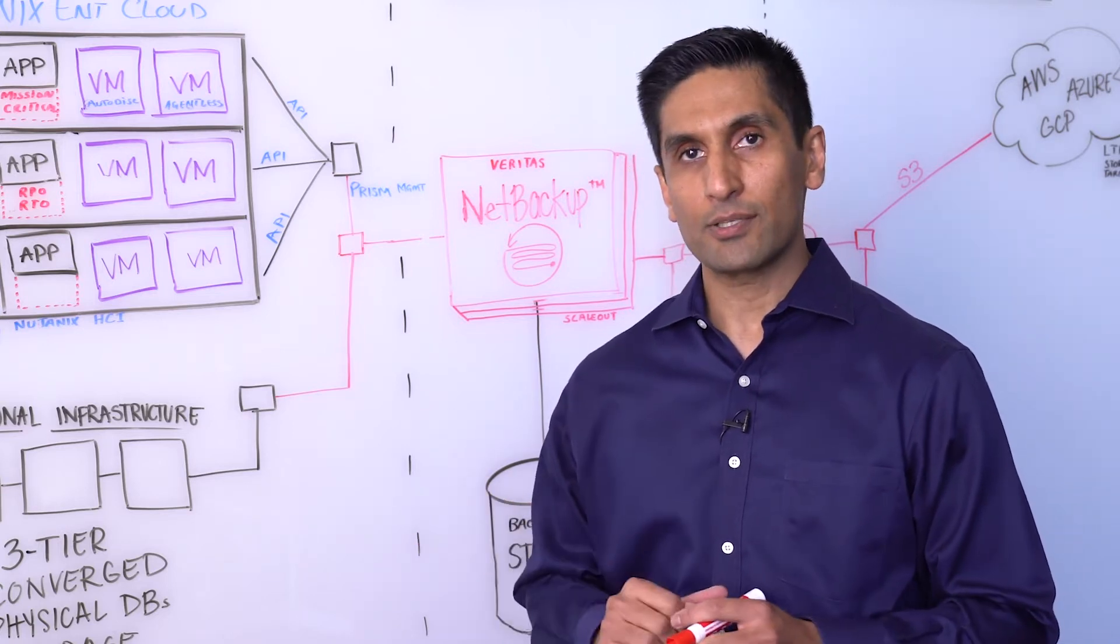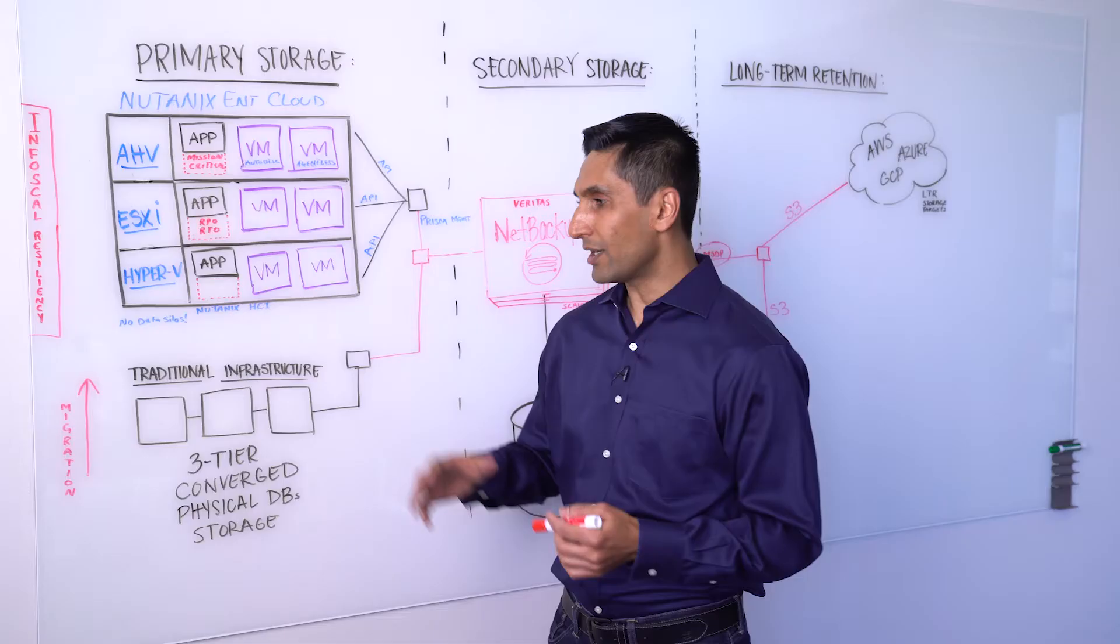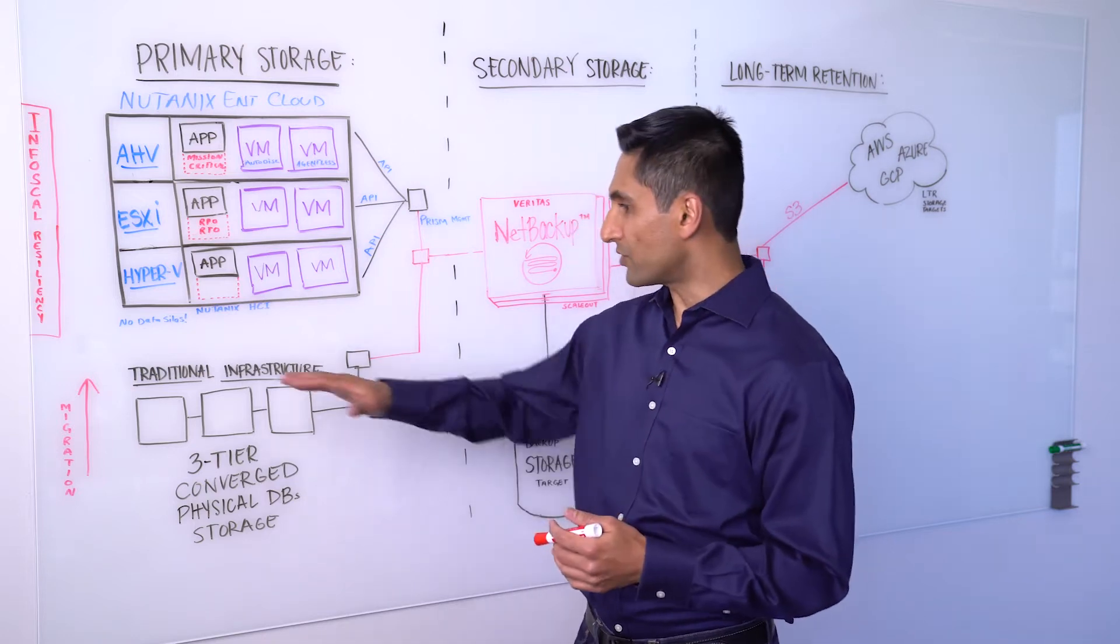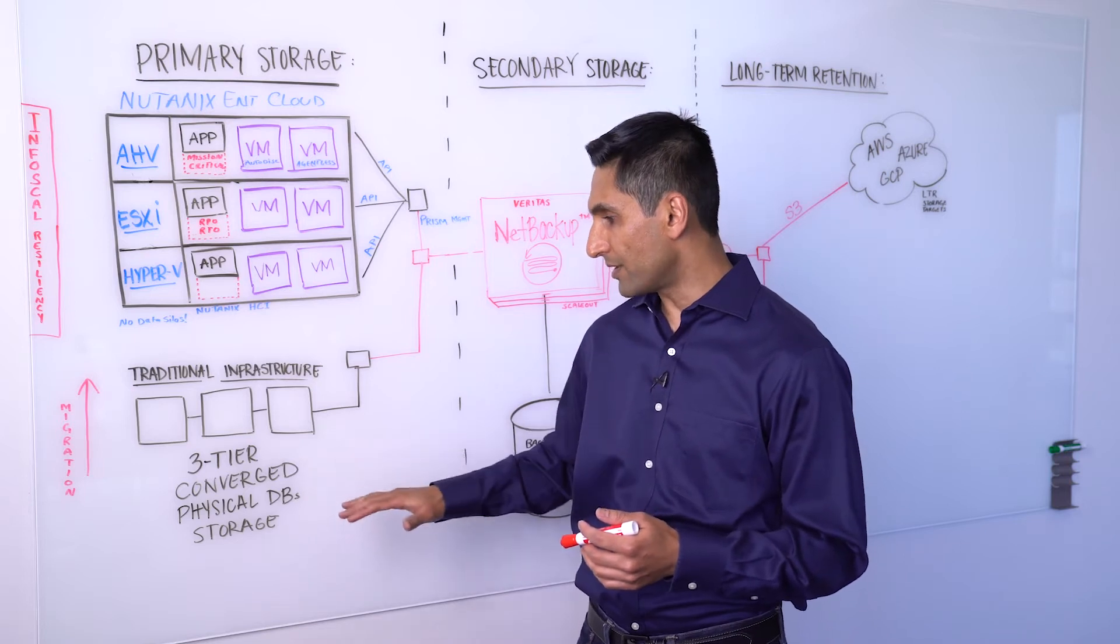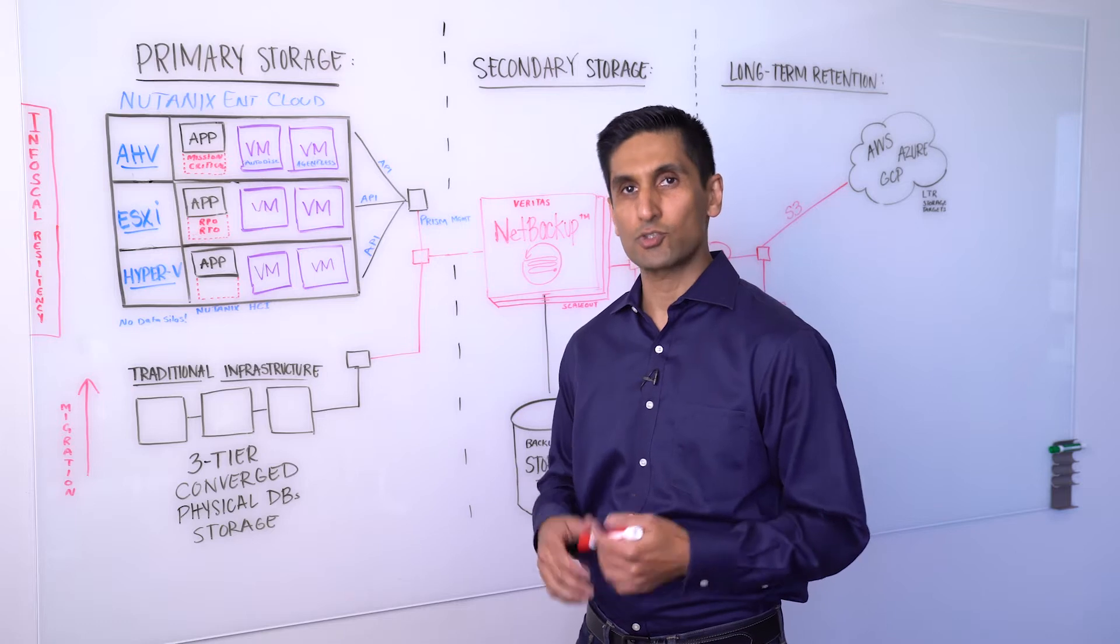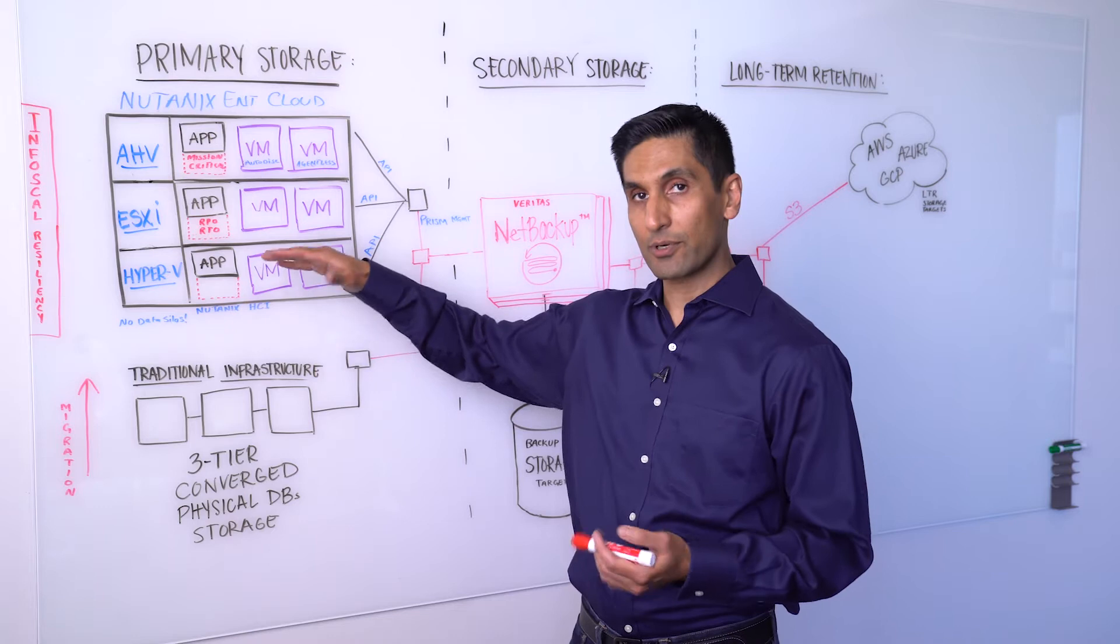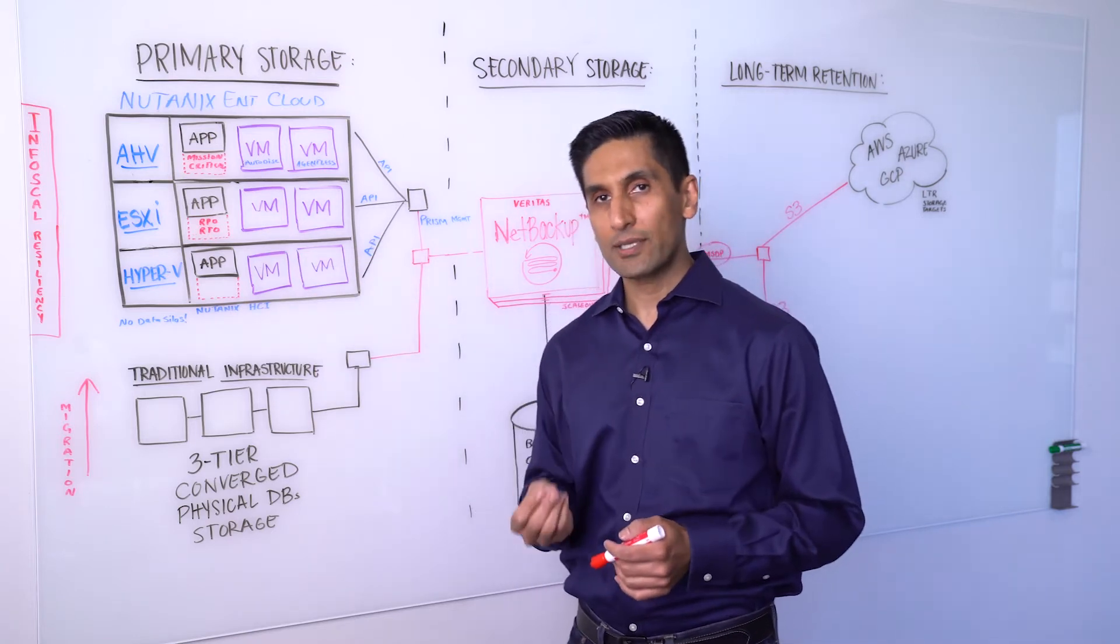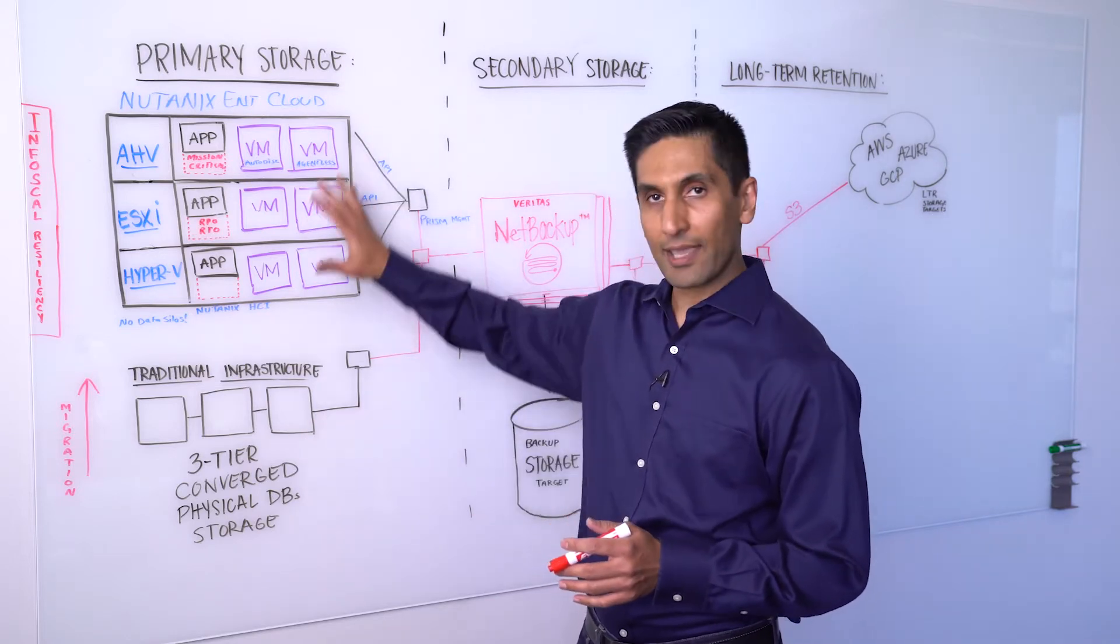Now before I talk about some of the use cases we have based on our joint solutions, I want to talk about a typical data center. What you will see in a typical data center is some mixed technology such as traditional infrastructure that would include three tier architecture, converged infrastructure, some isolated physical databases and applications, storage technologies, and so forth. And maybe they have some level of HCI or hyperconverged infrastructure, and if not, you'll be bringing hyperconverged infrastructure to them. But the point is, it does not matter what kind of technology your customer has. Veritas will protect everything.